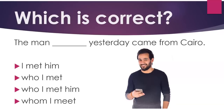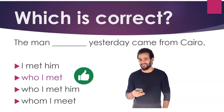Which is correct? 1. The man yesterday came from Cairo. I met him. Options: (a) Who I met, (b) Who I met him, (c) Whom I meet. The correct answer is: Who I met.